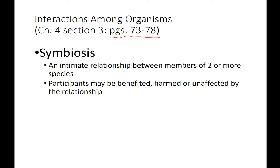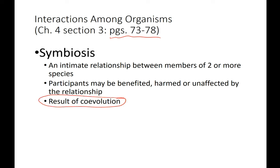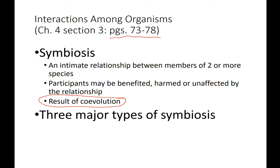In some cases, both species could benefit. In some cases, only one of the species benefits, and there are different names we give for those types of relationships. It's the result of evolution that's occurred side by side, because evolution doesn't really occur in isolation — all evolution is co-evolution.